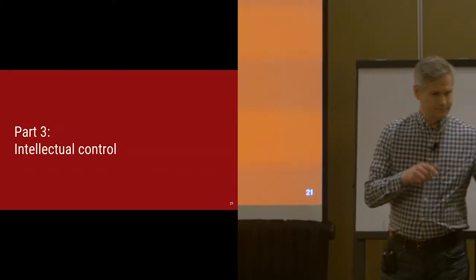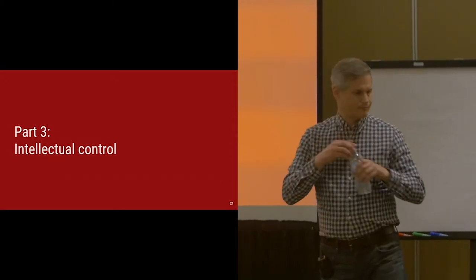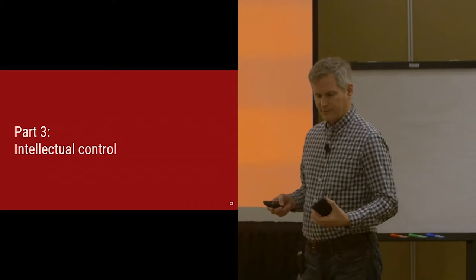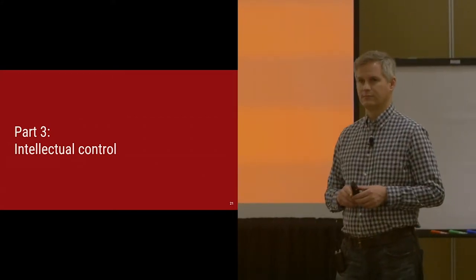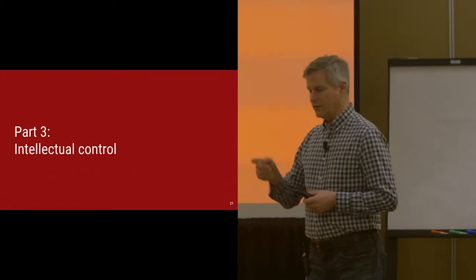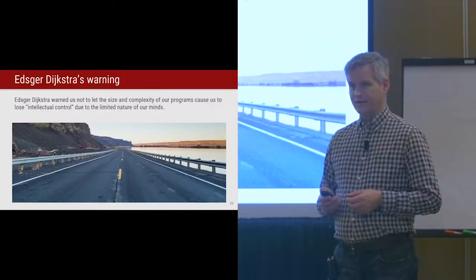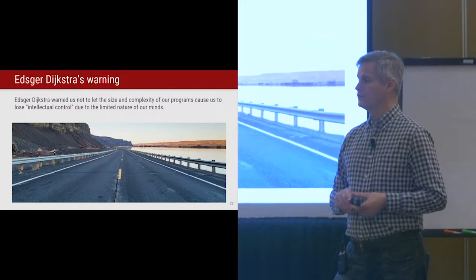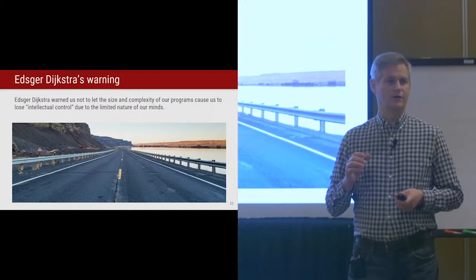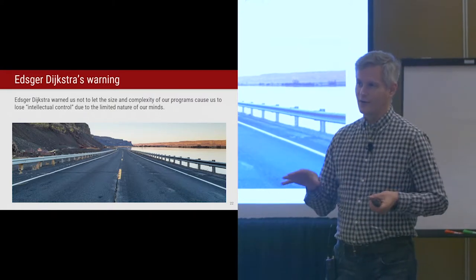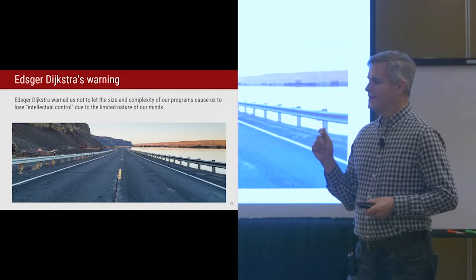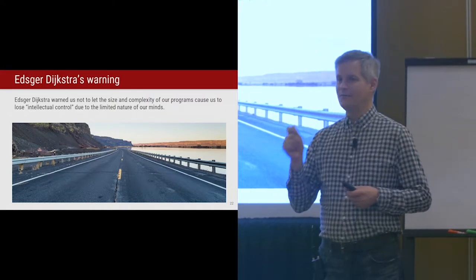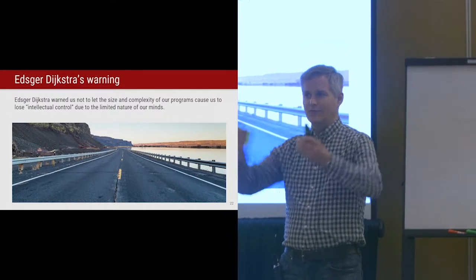Part three is about intellectual control. In the early days of software there was Edsger Dijkstra, famous for writing papers saying we should write proofs about our programs, we should aspire to be mathematicians, and generally disdainful of the state of practice - a modern-day software architect, but even more mathematical. He would always say: beware, as your programs get big and complicated, you're going to lose intellectual control. He would say we need to be humble in our intellectual abilities and realize when things are getting out of our control.